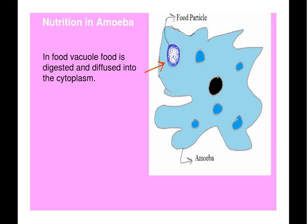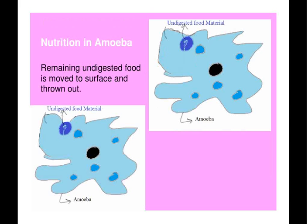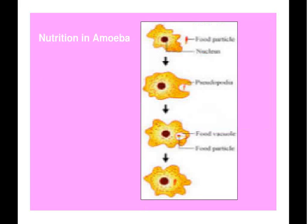After this, the vacuole containing undigested food material is moved to the surface and thrown out of the body. With this, the process of nutrition in amoeba completes. Here is a picture for nutrition in amoeba.